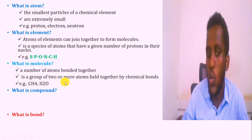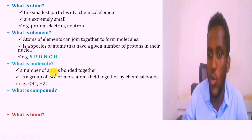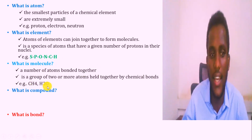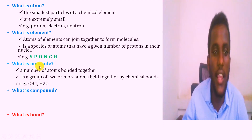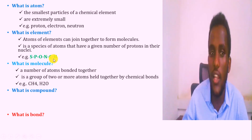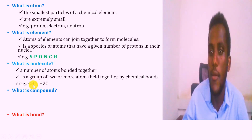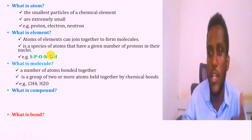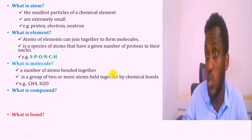A group of two or more atoms held together by a chemical bond forms molecules. For example, CH4 is methane, and H2O is water. When carbon and hydrogen combine together, that forms methane. When hydrogen and oxygen combine together, that forms water.